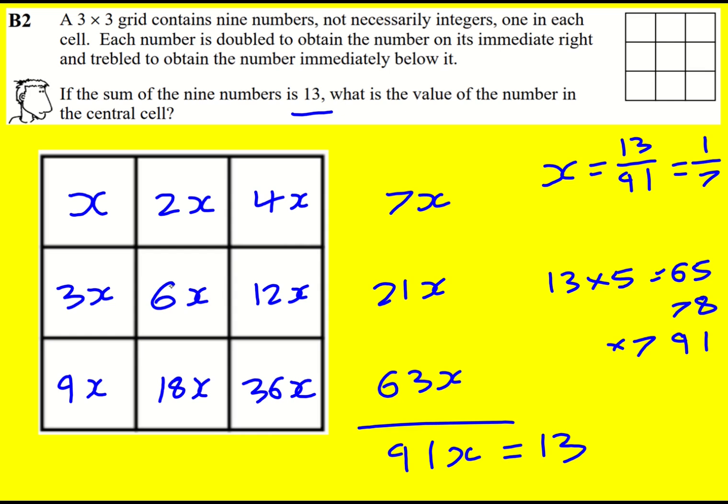So the value in the central cell, we're nearly there, is 6x so it's just going to be 6 times 1 over 7 therefore it's 6 over 7.